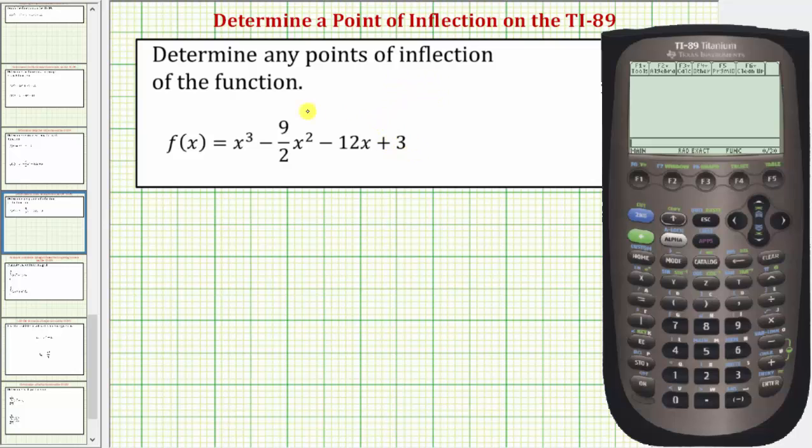To begin, we want to graph the given function. To do this, we'll press diamond F1 for y equals. Let's go ahead and clear out this old function and enter the new function in y1. So we'll press up, clear, and then enter x raised to the power of 3 minus 9 divided by 2 x raised to the power of 2 minus 12x plus 3. Enter.